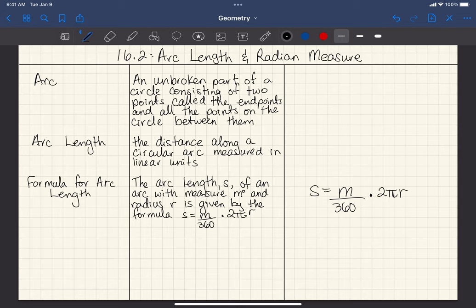So today we're doing 16.2, arc length and radian measure. We already kind of know what an arc is, we've already gone over it. I actually like this better, the original definition I gave you guys said a continuous part, which is a bit misleading because I think some of you guys might think it's the whole circle. But it just means that there's no breaks in that segment. So I like this definition better, it says an unbroken part of a circle consisting of two points, called the endpoints, and all the points on the circle between them.